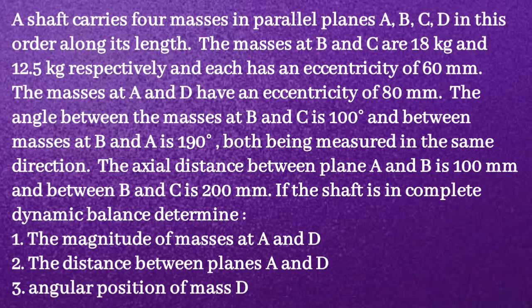The axial distance between planes A and B is 100 mm and between B and C is 200 mm. The masses at A and D have an eccentricity of 80 mm. If the shaft is in complete dynamic balance, determine: first, the magnitude of masses A and D; second, the distance between planes A and D; and third, the angular position of mass at D.